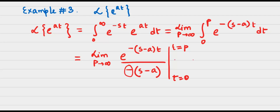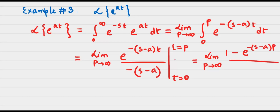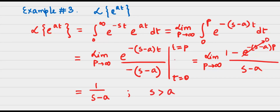We absorb the minus sign so the lower limit becomes the upper limit, giving 1 divided by s minus a. If t equals p, we have e to the power negative (s minus a) times p over (s minus a). Taking the limit, this contribution goes to 0, and we end up with 1 over s minus a, applicable for s greater than a. Interestingly, this Laplace transformation of e to the power at resembles the transform of 1, which, as we'll see later, is due to the translation or shifting property. Thank you.